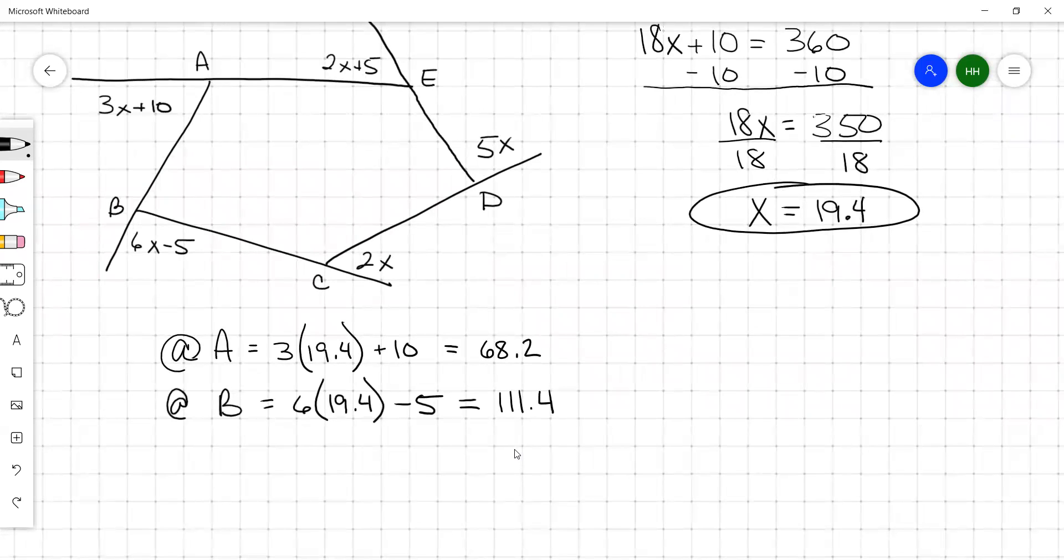And then we got at vertex C. That's just 2 times 19.4. 38.8.